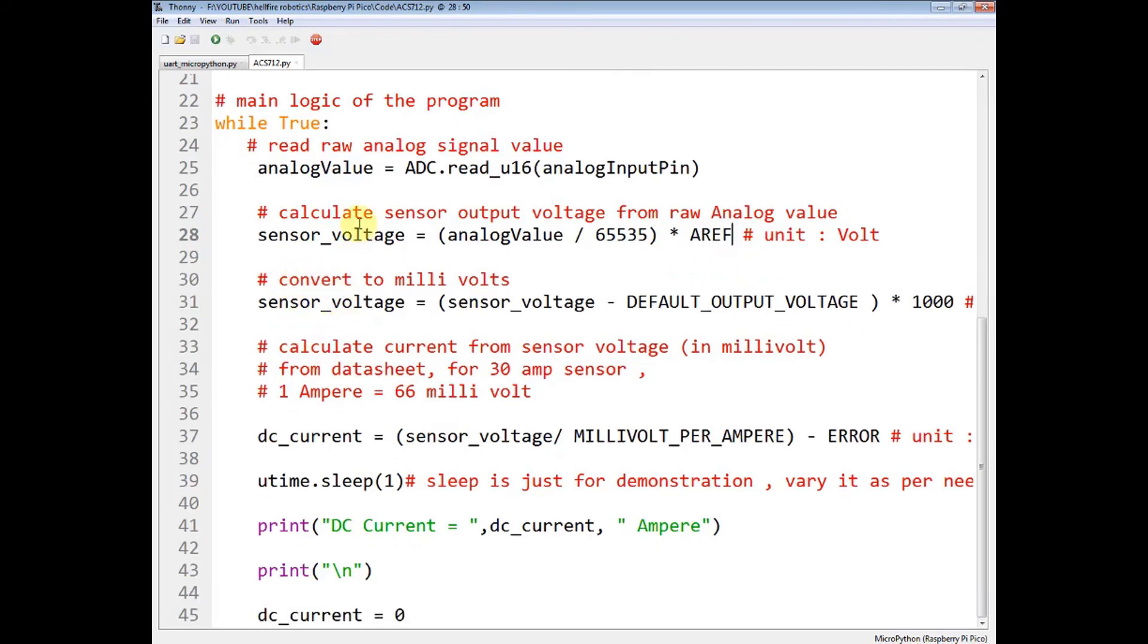Now convert this voltage into millivolts. You have to multiply this with 1000 but before that you have to subtract the default output voltage.